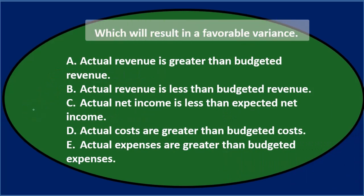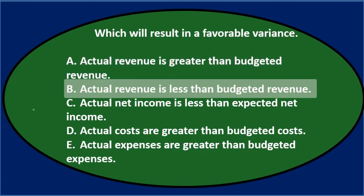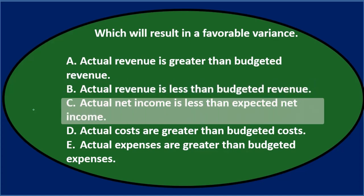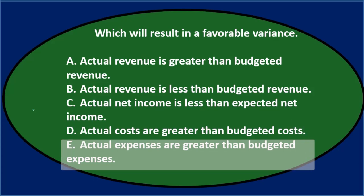Next question: Which will result in a favorable variance? A. Actual revenue is greater than budgeted revenue. B. Actual revenue is less than budgeted revenue. C. Actual net income is less than expected net income. D. Actual costs are greater than budgeted costs. E. Actual expenses are greater than budgeted expenses.